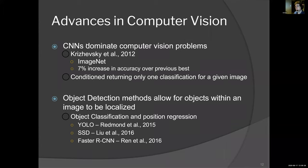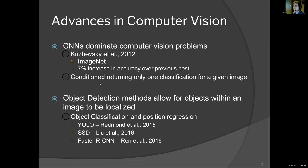CNNs dominate the computer vision problem. In 2012, Krzyzewski released a paper using CNNs on the ImageNet dataset, which has tens of millions of images in 10,000+ classifications, and they had a 7% increase in accuracy over the previous best — a generational improvement. Ever since then, CNNs have dominated the computer vision literature. CNNs are conditioned on returning one classification for a given image, so if both Sam and Fred the cheetah are in the same image, the system gets confused. A way around this is object detection methods — including YOLO, single shot detection, and Faster RCNN — which allow us to localize objects within an image.